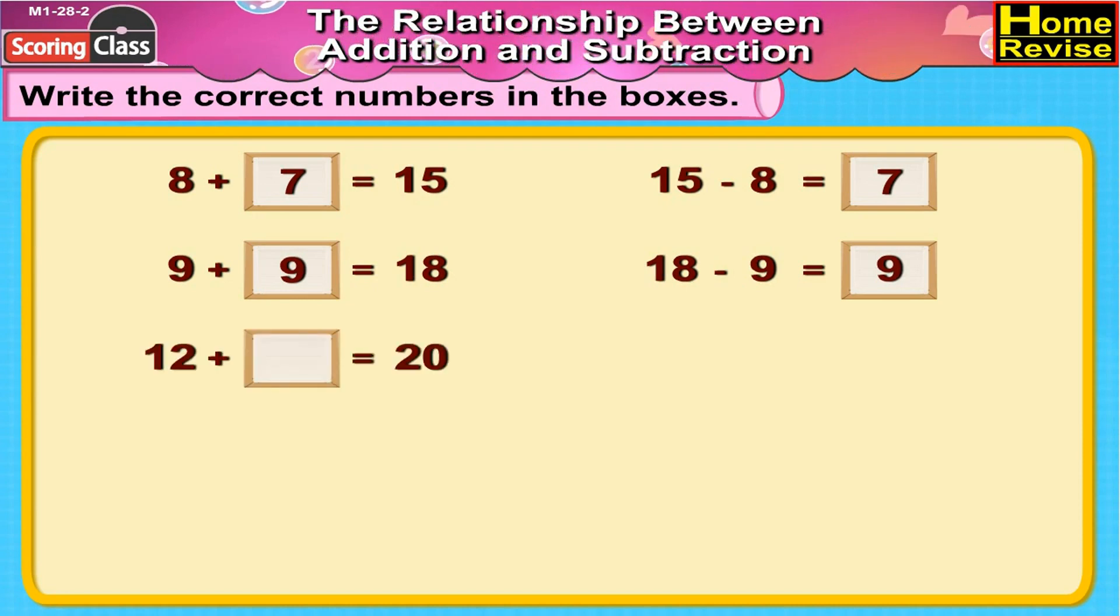12 plus dash is equal to 20. 12 plus how many is equal to 20? Kids, you are brilliant. 8 it is. 12 plus 8 is equal to 20. Now 20 minus how many would be 12? You are right. It has to be 20 minus 8 is equal to 12.